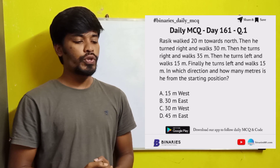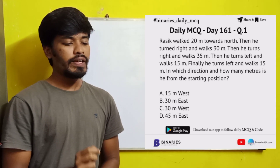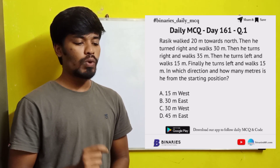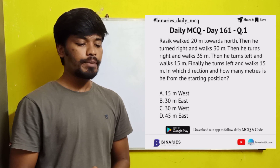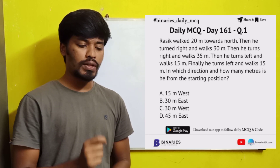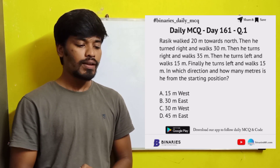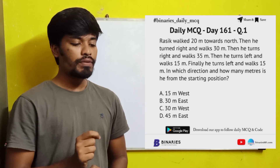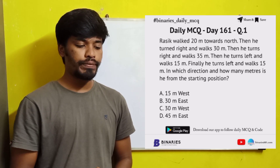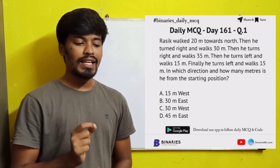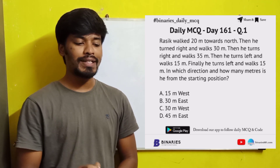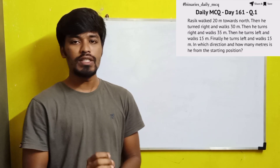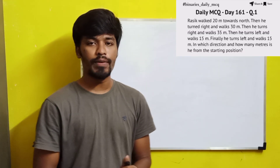The first question is: Rasik walked 20 meters towards north, then he turned right and walked 30 meters, then he turns right and walks 35 meters, then he turns left and walks 15 meters, finally he turns left and walks 15 meters. In which direction and how many meters is he from the starting position?